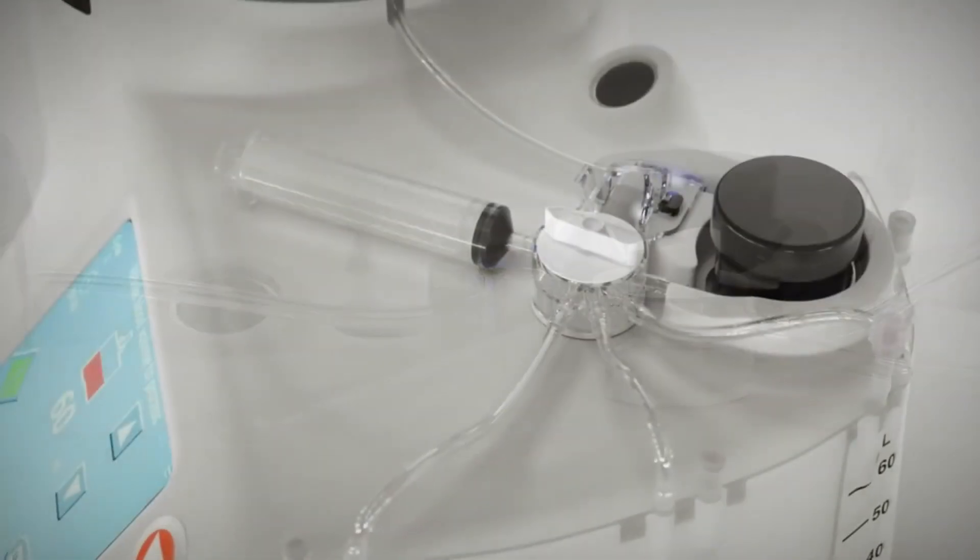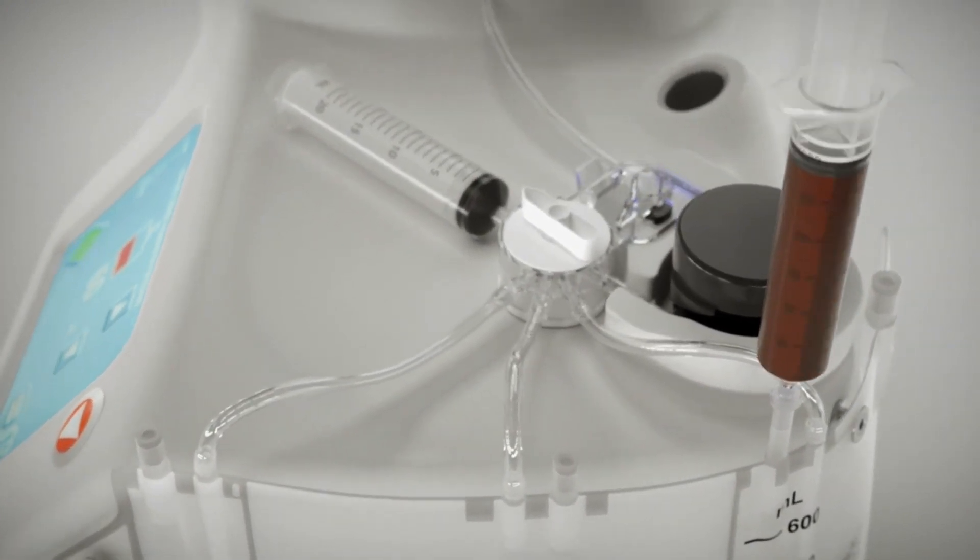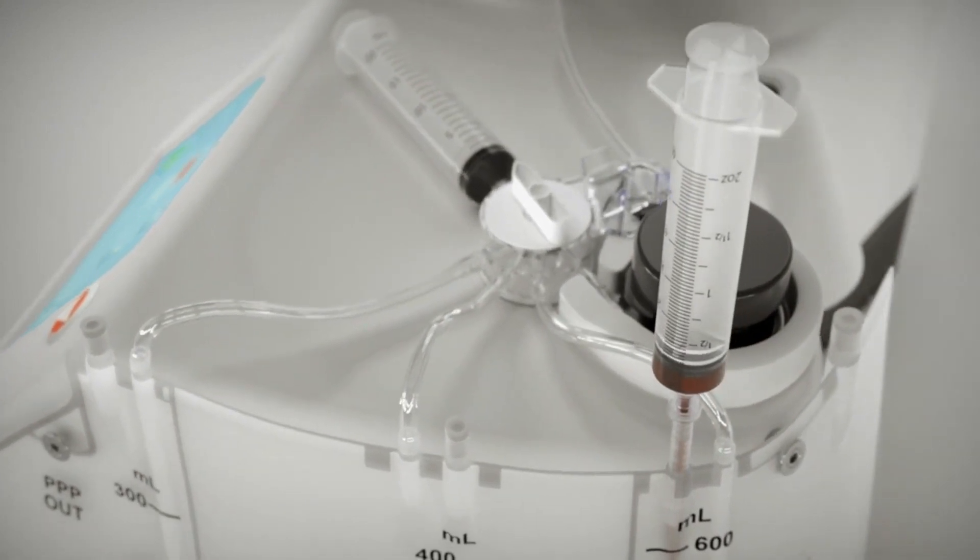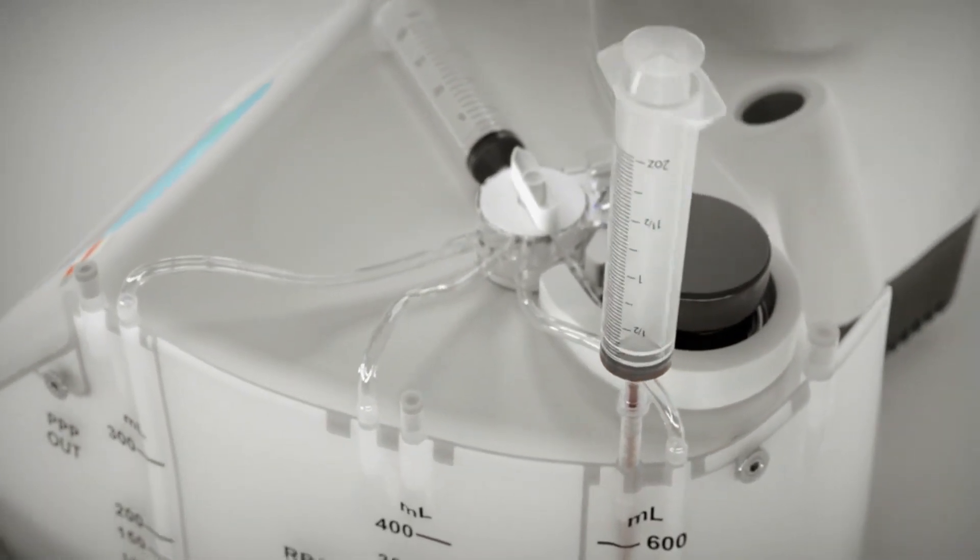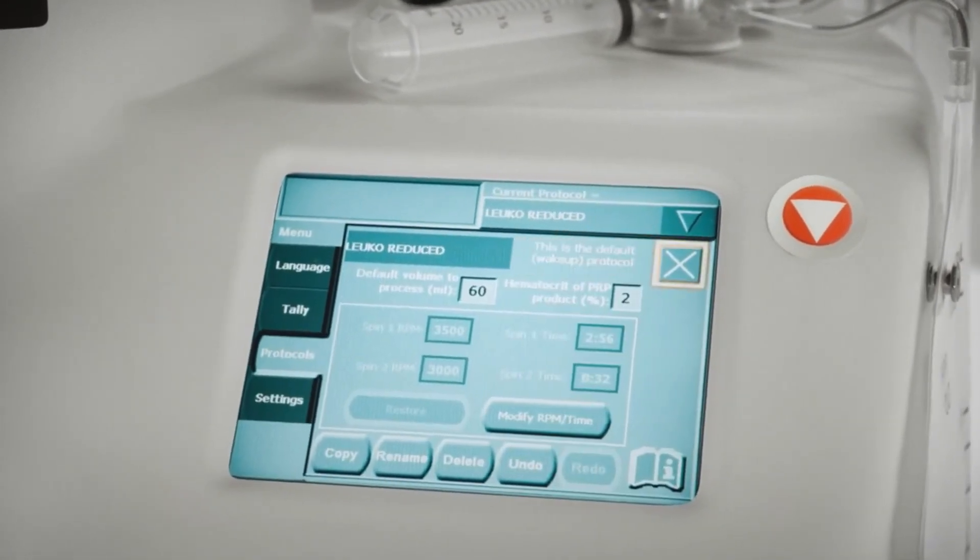Pumps move the blood products into collection bags, add anticoagulant, and re-infuse fluids. Replacement fluids, e.g. saline, serum albumin, plasma protein fraction, fresh frozen plasma, are infused into the patient to maintain appropriate intravascular volume and pressure.